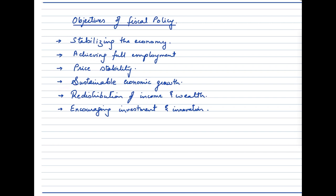Another objective is sustainable economic growth. Governments may use fiscal policy to promote long-term growth by investing in infrastructure such as transport, communication, and energy to increase productivity and competitiveness. Redistribution of income and wealth is also a key objective — progressive taxes and targeted social spending can reduce income inequalities. Fiscal policies can also encourage investment and innovation through tax credits or deductions for research and development.